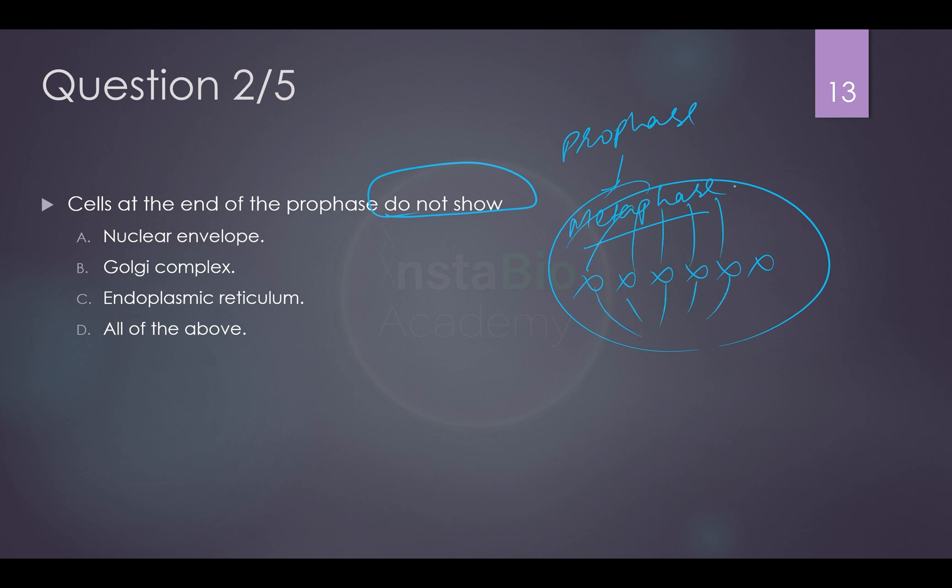And if you look at the logic or common sense, these all three are components of endomembrane system. We have seen in our cell structure and function question session. If they all are part of endomembrane system and if they all are present here, here, nuclear envelope, then this cannot happen. So that means these all should be absent and they should not be available or apparent or they should not show themselves at the end of prophase. So the answer is all of the above, otherwise how these chromosomes will move apart.